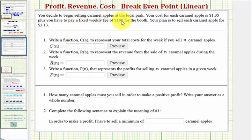You decide to begin selling caramel apples at a local park. Your cost for each caramel apple is $1.35, plus you have to pay a fixed weekly fee of $180 for the booth. Your plan is to sell each caramel apple for $3.13.